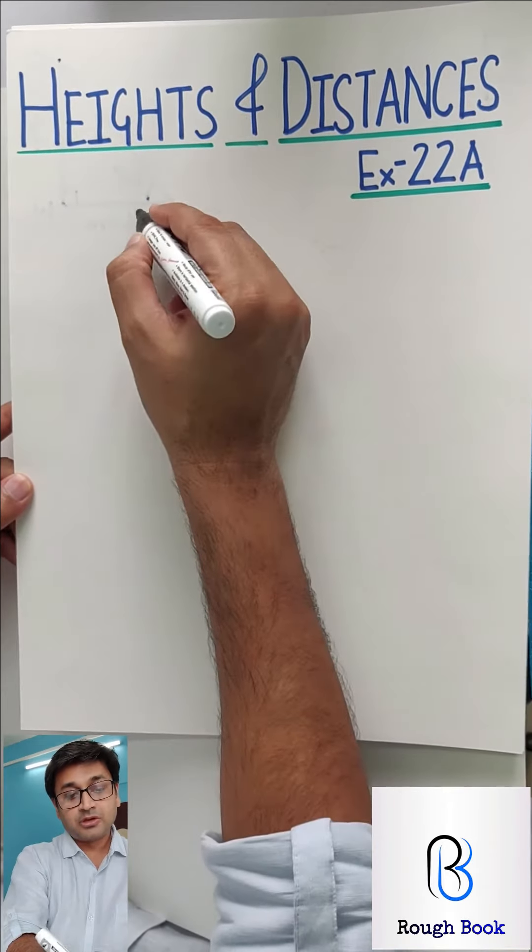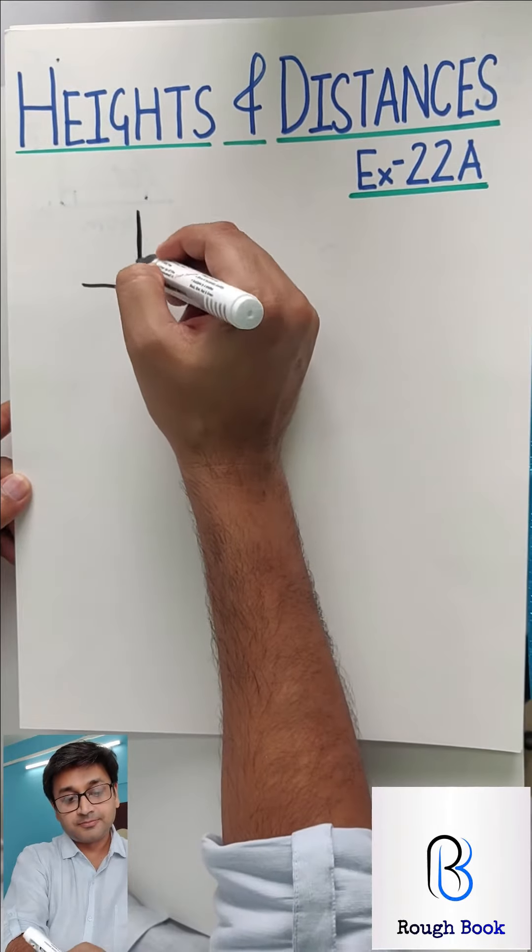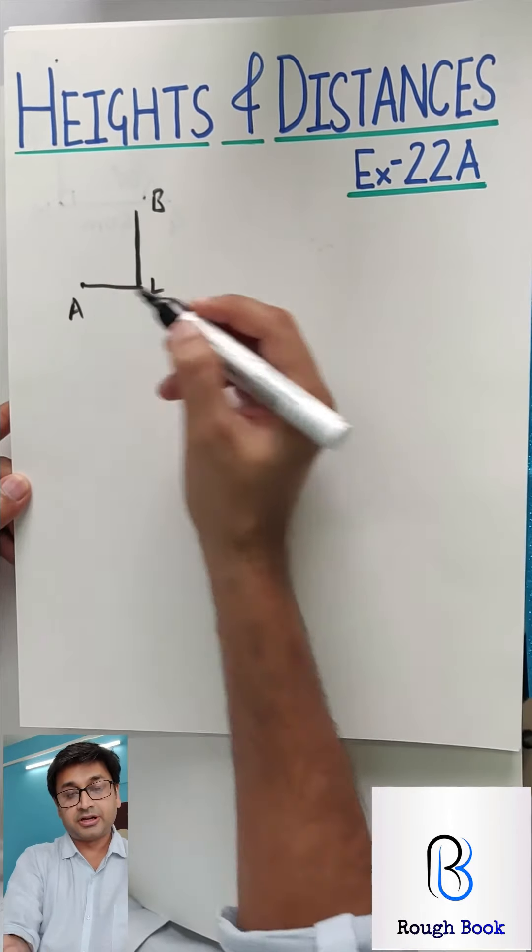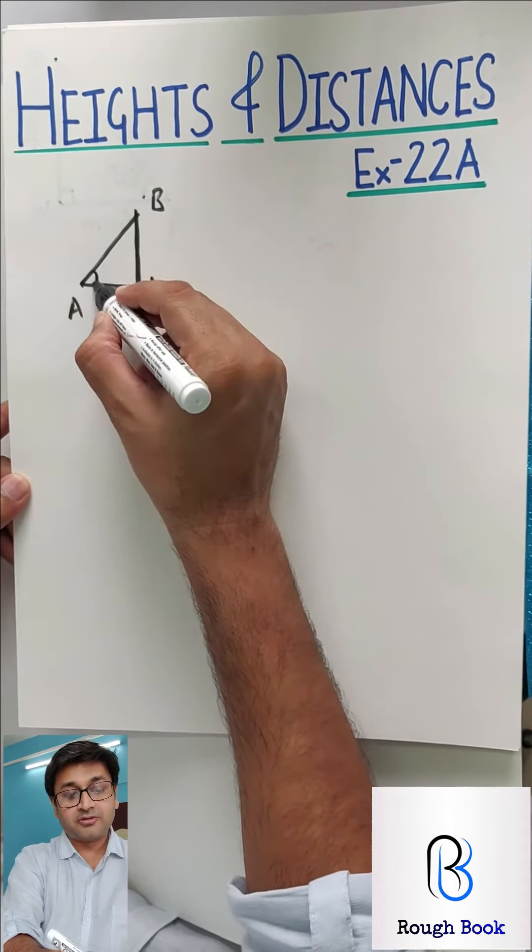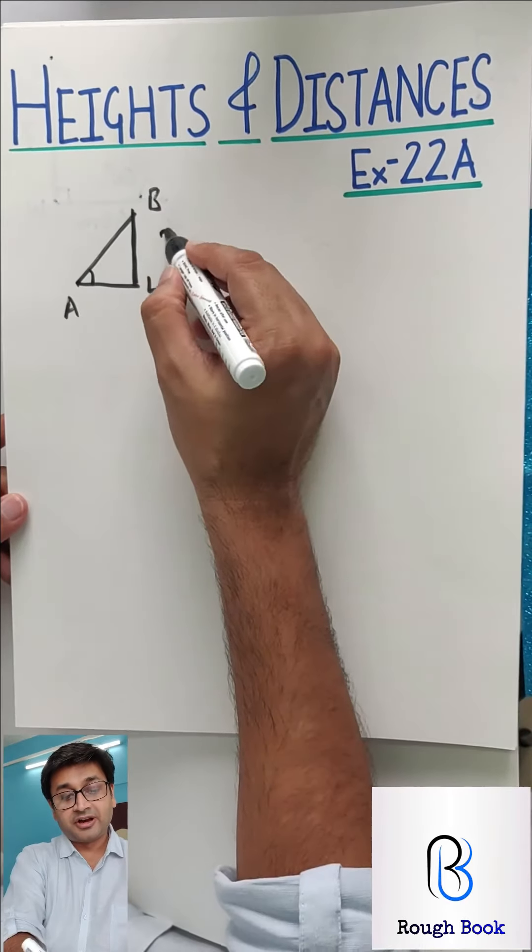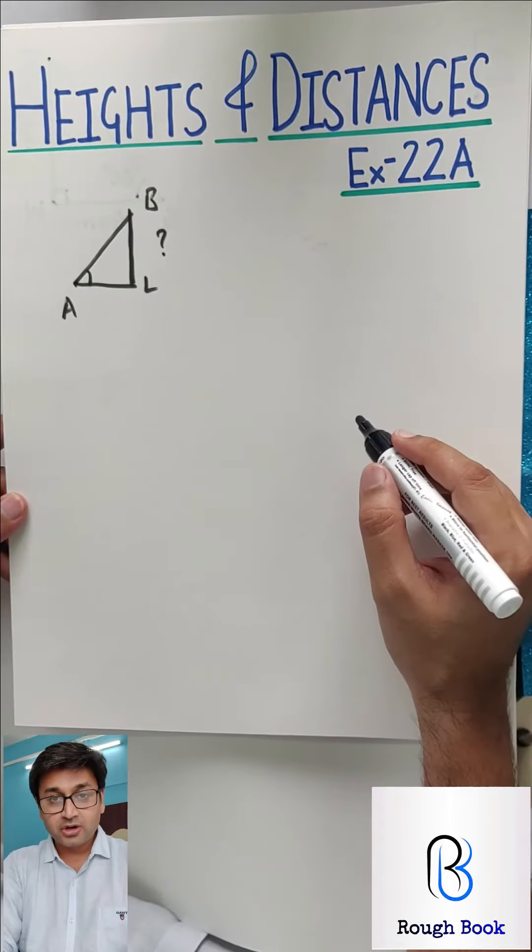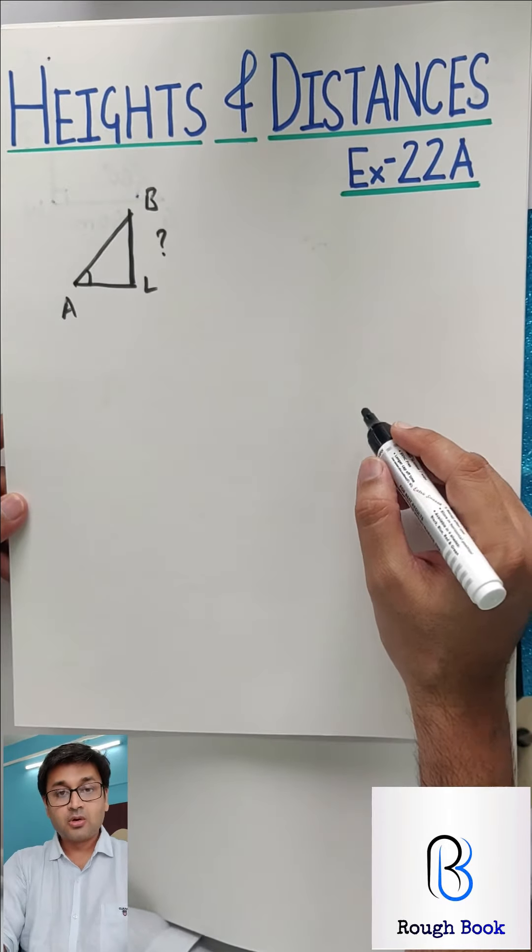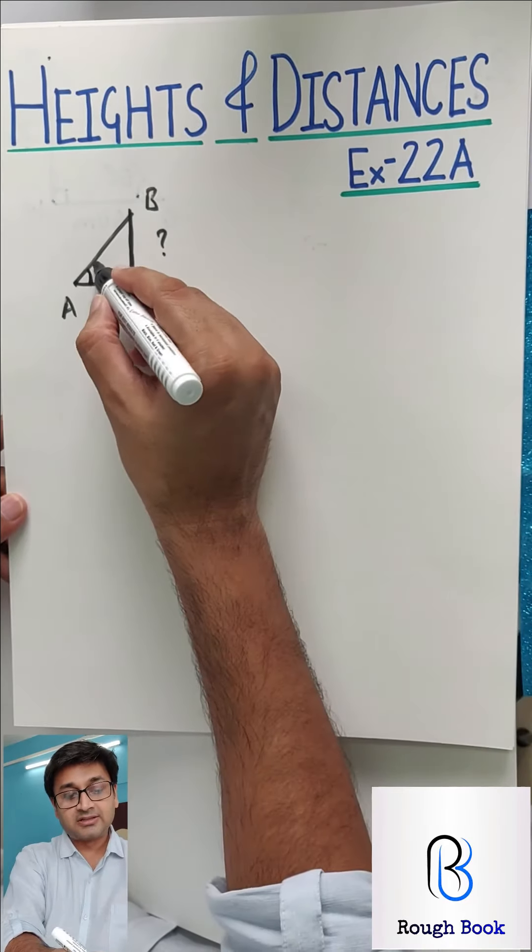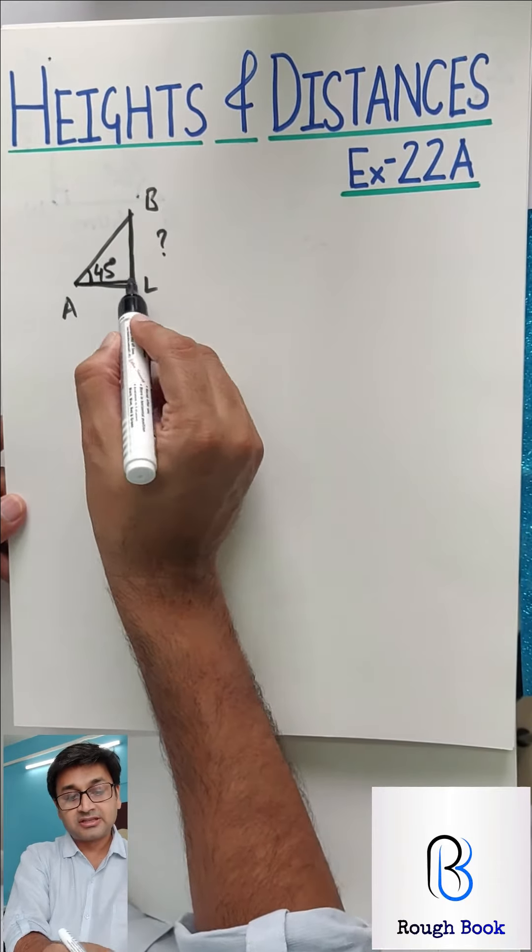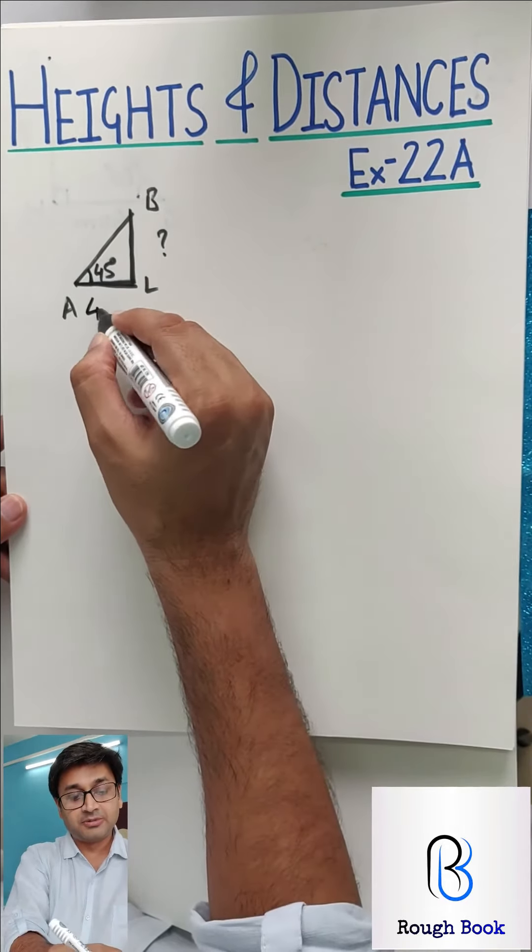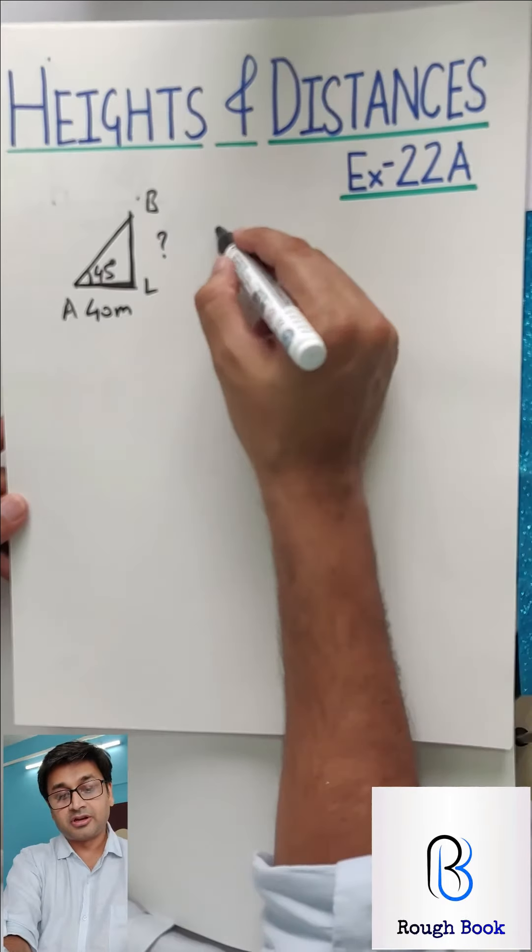For example, you will be given that this is a building. And you are standing at this point A. When you look at the top of the building, you can find the angle at which you are looking up. How will you find the height of the building? So instead of actually going and measuring the height of the building, you will find this angle. Let's say the angle is 45 degrees. And you will find this distance, the distance of yourself from the building. Let's say 40 meters.